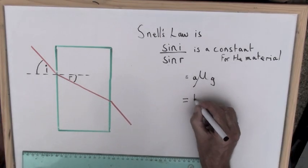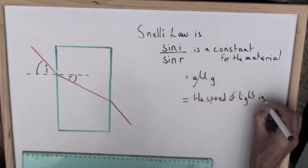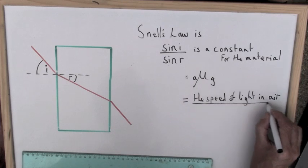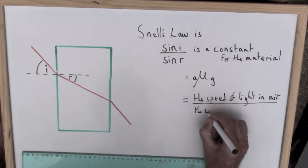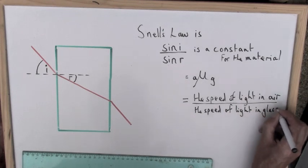Although I won't explain the geometry here, that refractive index is simply related to the speed of light in air and the speed of light in glass. The refractive index equals the speed of light in air divided by the speed of light in glass.